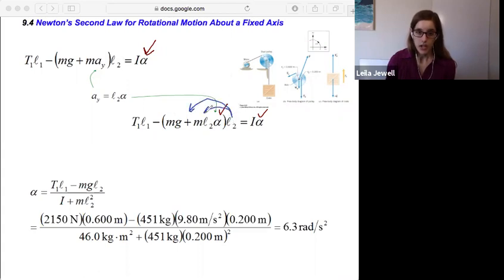So what we can do now is we want to go ahead and distribute out this L2 to both of these terms and then we'll get both of our alphas onto the right side of the equation.